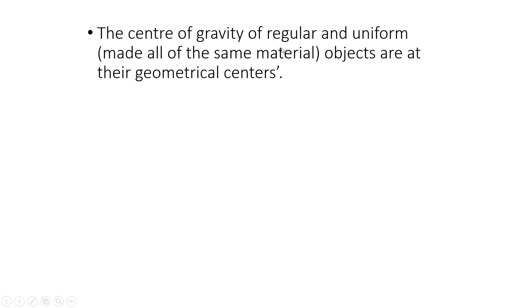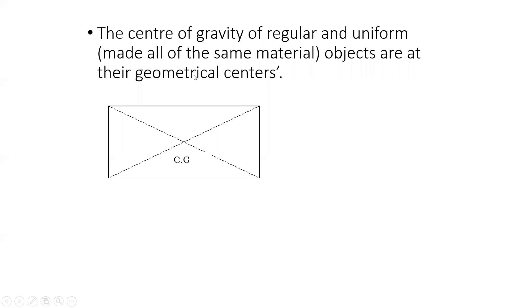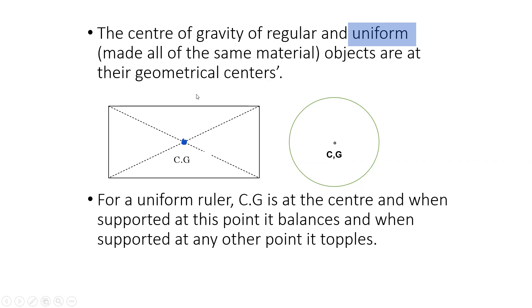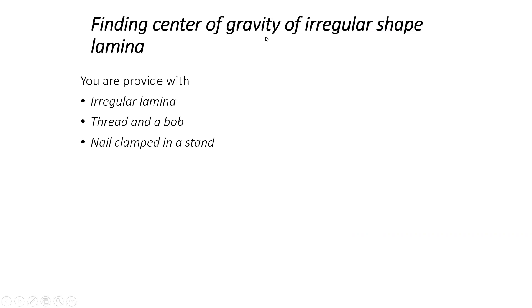The center of gravity of a uniform object is normally at the center, since uniform means even distribution of mass. There is a difference between regular and uniform: regular means having a definite shape, while uniform means even distribution of mass. An object can be regular but have non-uniform distribution of mass, so it won't have its center of gravity at the geometric center. Normally in exam questions when the object is stated to be uniform, you consider its center of gravity at the center. But for a non-uniform irregular object, we use a plumb line method.